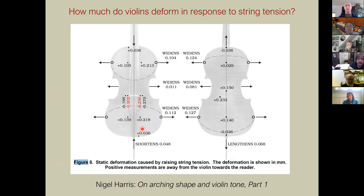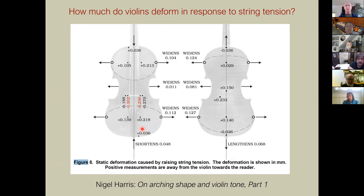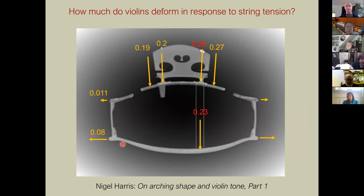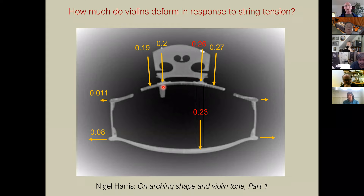One of the first people to measure violin deformation was Nigel Harris. His measurements showed about a quarter of a millimeter of deflection on one side and about 0.2 mm on the bass bar side, with a bit more toward the wings. Since there's no extra stress at the wings, this really represents a kind of rocking that happens under tension. The stiffness of the bass bar versus the stiffness of the back and other factors will determine how much of that occurs.